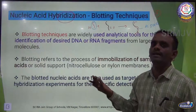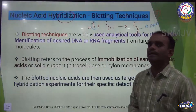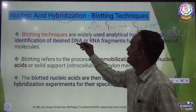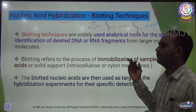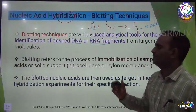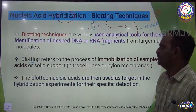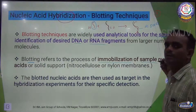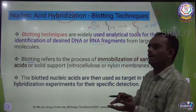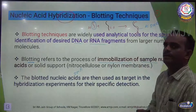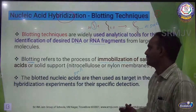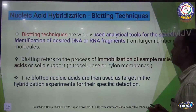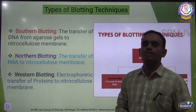Nucleic acid hybridization refers to DNA or RNA hybridization. Blotting techniques are widely used as analytical tools for the specific identification of desired DNA or RNA molecules. Blotting refers to the process of immobilization — the sample nucleic acid cannot move. The blotted DNA is then used as a target in the hybridization experiment for specific detection.